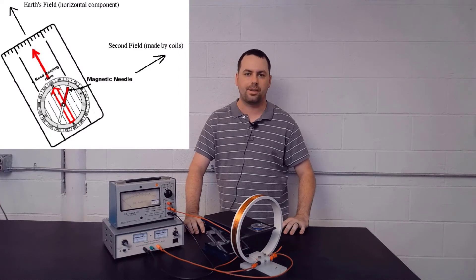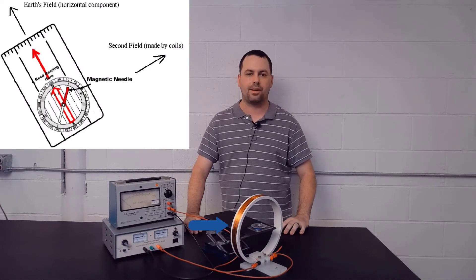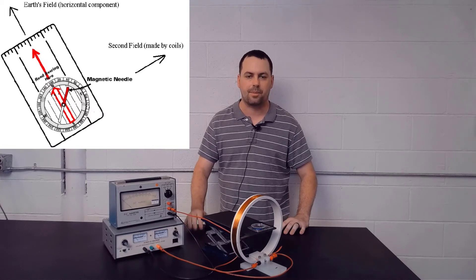The second field will be created by circular coils of wire. The magnetic field at the center of the coils is perpendicular to the plane of the coil and has a strength given by the magnetic field equation.